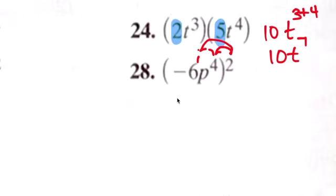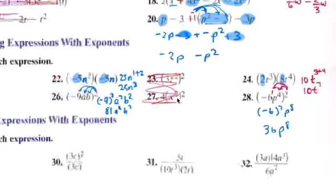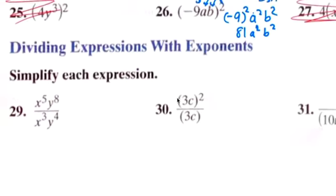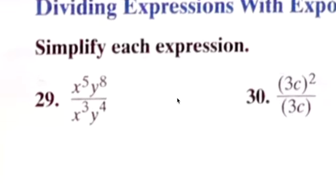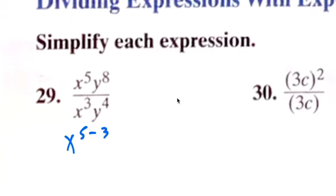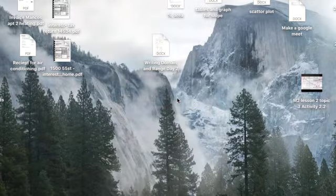You distribute, that's a negative six squared, p to the eighth, so the answer is 36p to the eighth. With division, you have to subtract the exponent, so x to the fifth minus three, y to the eight minus four.